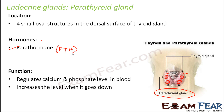So parathormone and thyrocalcitonin together regulate the level of calcium and phosphate. If the level in blood becomes too high, thyrocalcitonin brings it down; if it becomes too low, parathormone brings it up. These two hormones together maintain the calcium balance in the body.